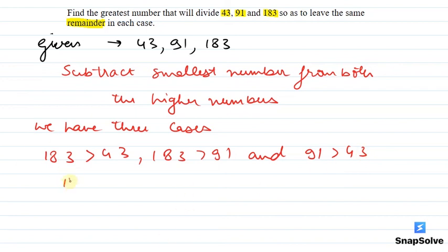Then, 183 minus 43 equals 140. Then, 183 minus 91 equals 92. And the third calculation: 91 minus 43 equals 48.